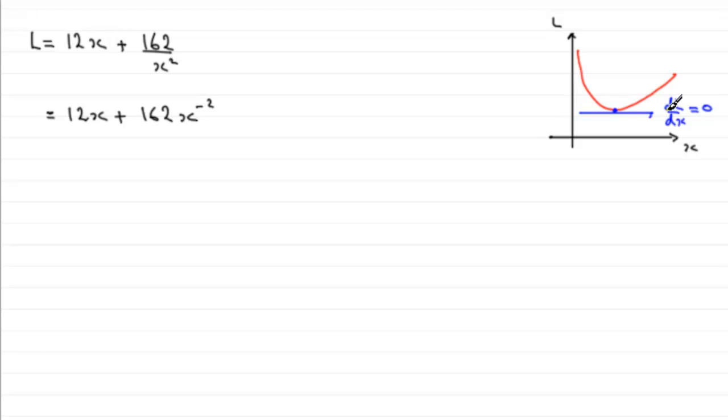That's why we're using calculus to locate this point. To differentiate this in the usual way, dL/dx equals—if you differentiate 12x with respect to x you just get 12, and if you differentiate 162x to the minus 2 with respect to x, just multiply minus 2 with 162 and subtract one from the power, giving you minus 324x to the power minus 3.